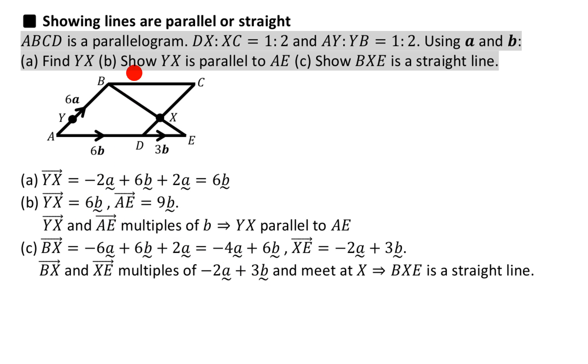One of the lines, YX - where's YX - YX is 6 times our vector b, and the other one is 9 times our vector b. So hopefully that makes sense. Any questions, just comment on the video.